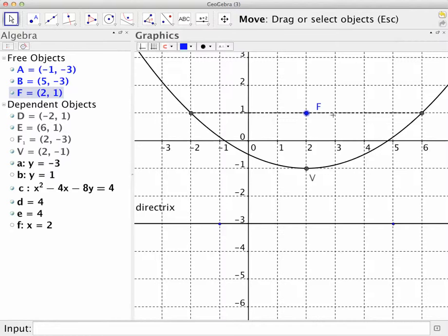Now you can see that it is 8, because it's 4 in either direction. And also you can see that P, the distance from focus to vertex or vertex to directrix, is 2. So again, 4P.